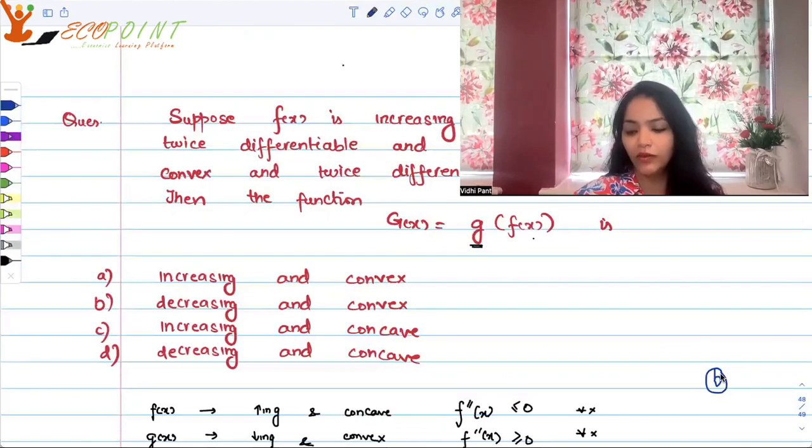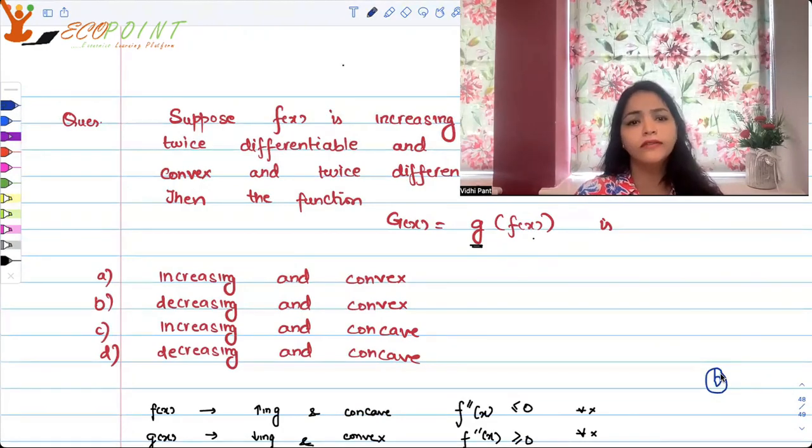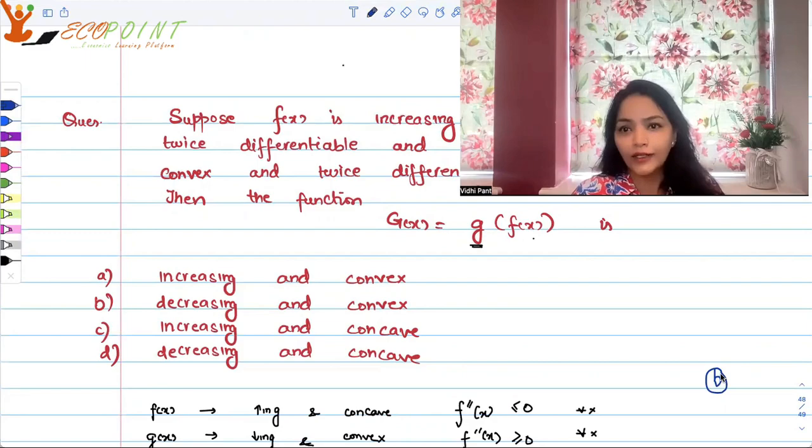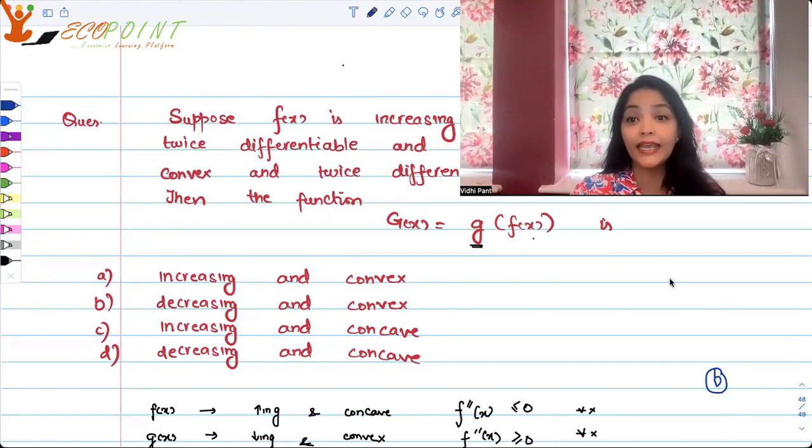Any question could be framed. They can create any combination. F could have been convex, G could have been concave. They can play around with the given information, but analysis is simple. You just have to know your calculus well, and then you're just applying a little bit of logic with certain facts and you'll get your answer. I hope this will help you in any question of this sort. Thank you.